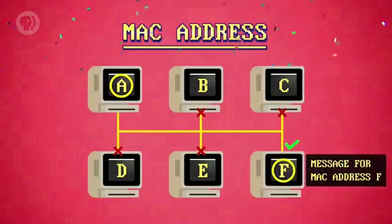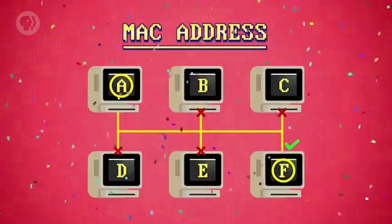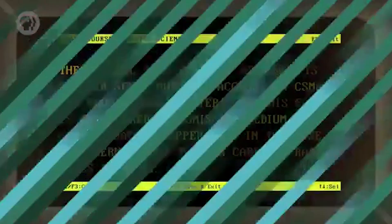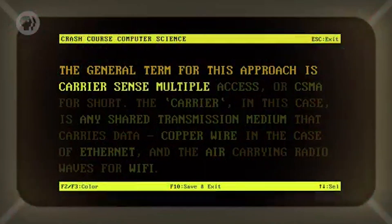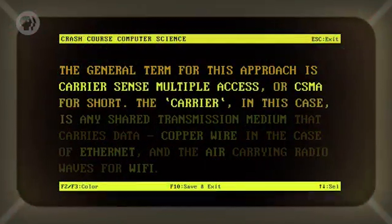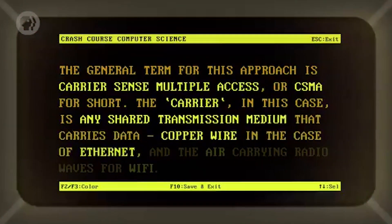This works really well. Every computer made today comes with its own unique MAC address, for both Ethernet and Wi-Fi. The general term for this approach is Carrier Sense Multiple Access, or CSMA. The carrier is any shared transmission medium that carries data — copper wire in the case of Ethernet, and air carrying radio waves for Wi-Fi.